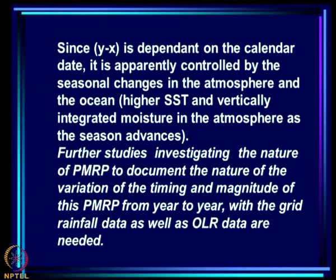Since Y minus X is dependent on the calendar date, it indicates that if PMRP is too early in the year the system is not yet ready for monsoon onset within 35 days. If it occurs later, the system is ready. This is apparently controlled by the seasonal changes in the atmosphere and ocean — higher SST and vertically integrated moisture as the season advances.